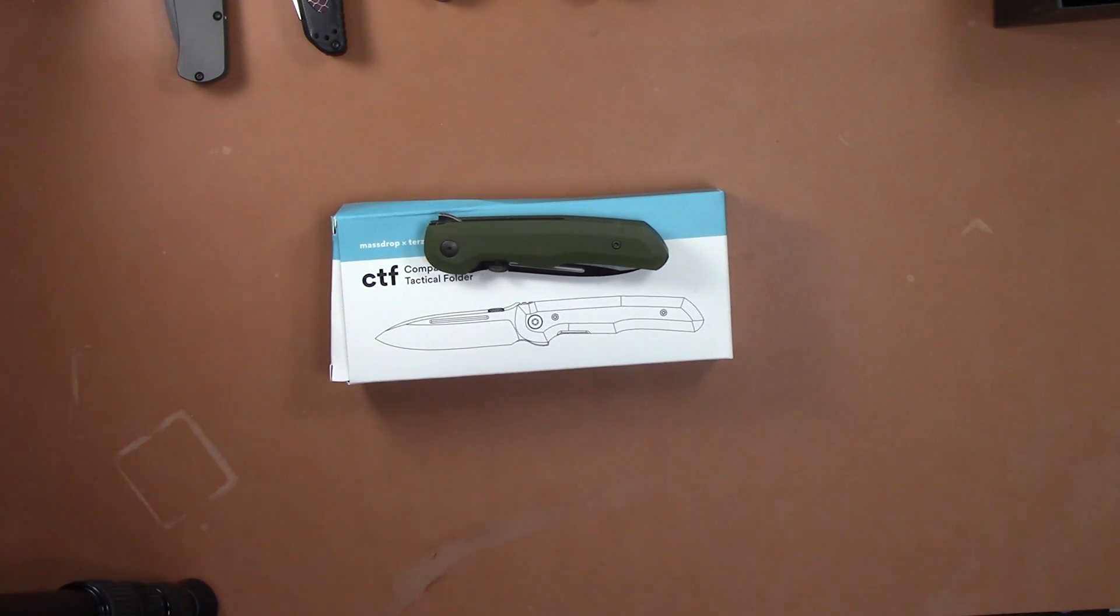What's happening YouTubers? Doing a video today on the new Massdrop Bob Terzuola CTF, which is Compact Tactical Folder. The drop is now over and there is none available. It was limited to 500 pieces of each color, so this is the OD green, and they were about $149.99, I believe $139.99, something around there.